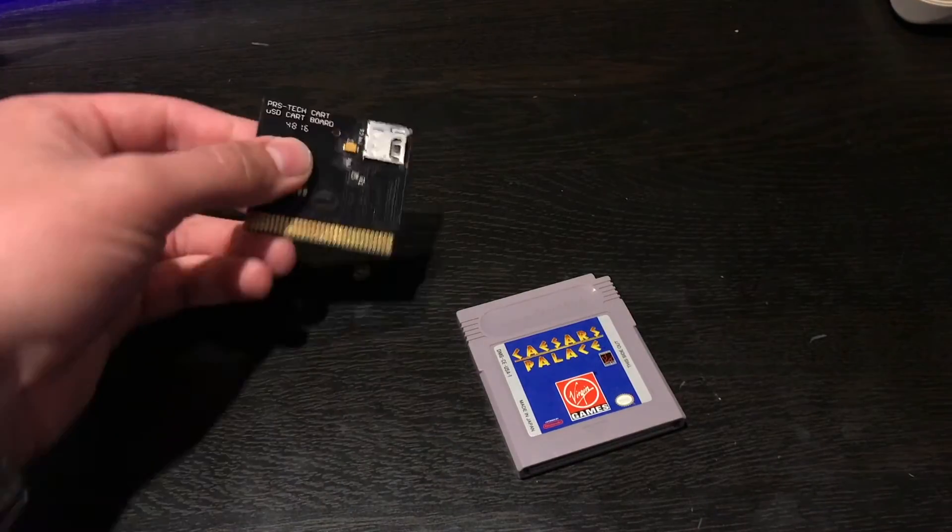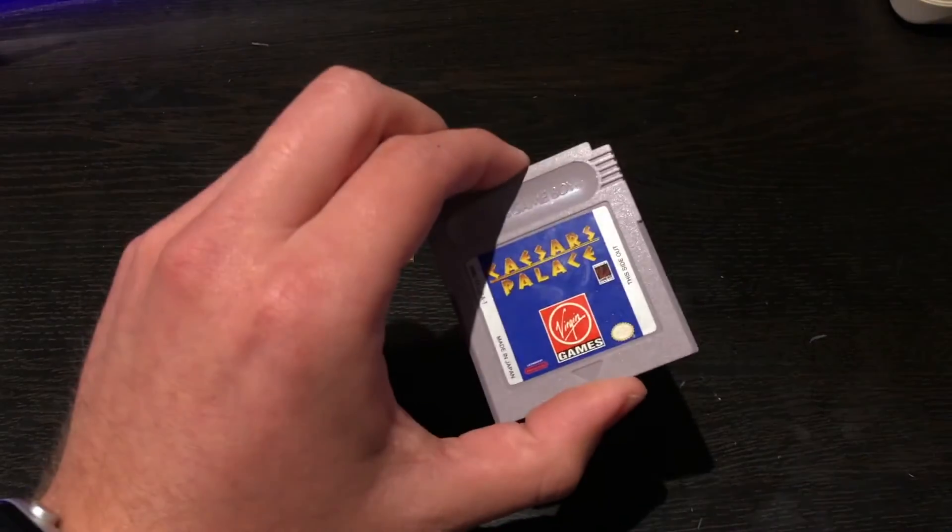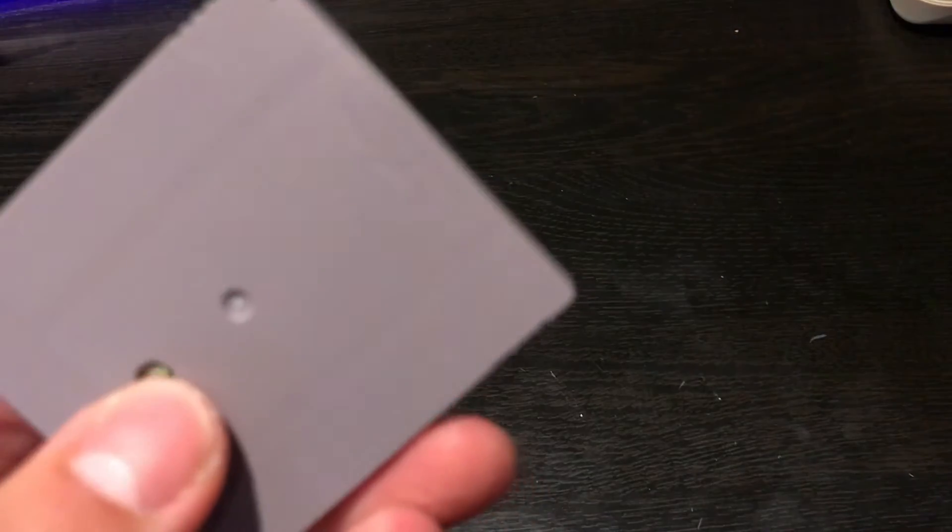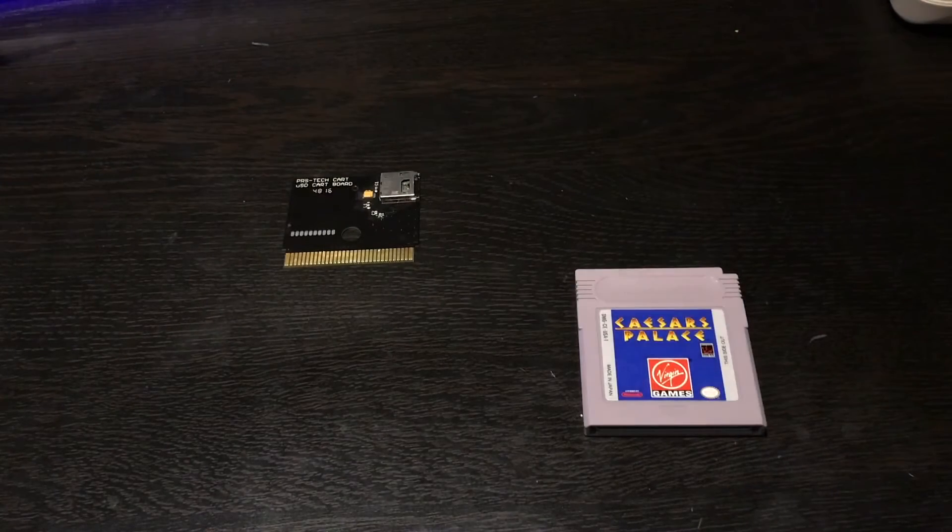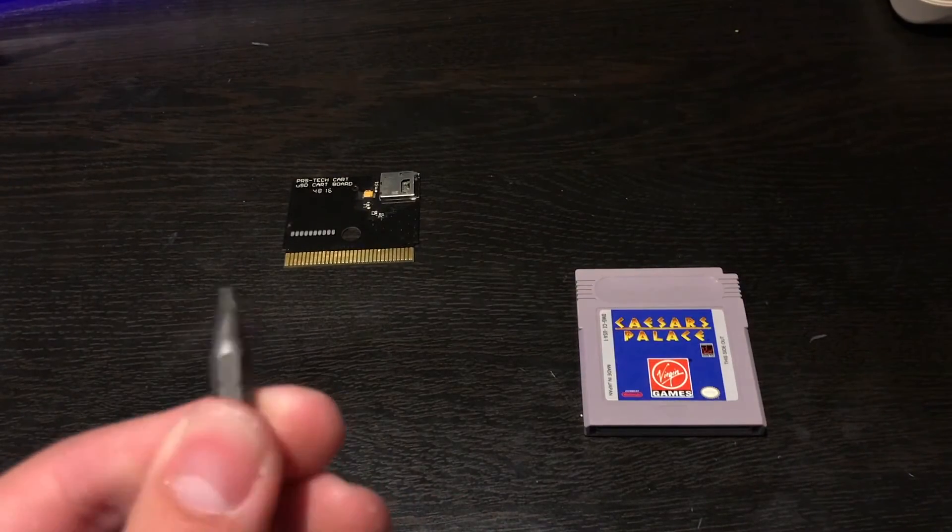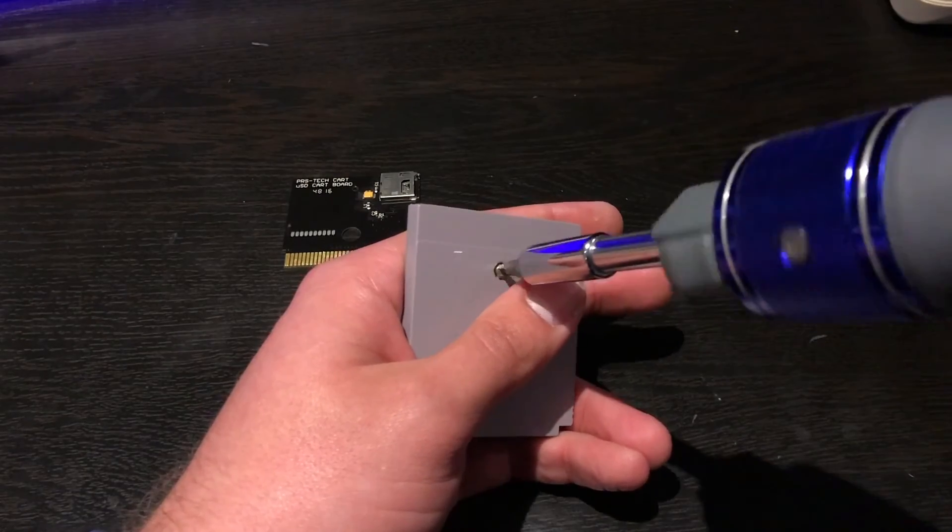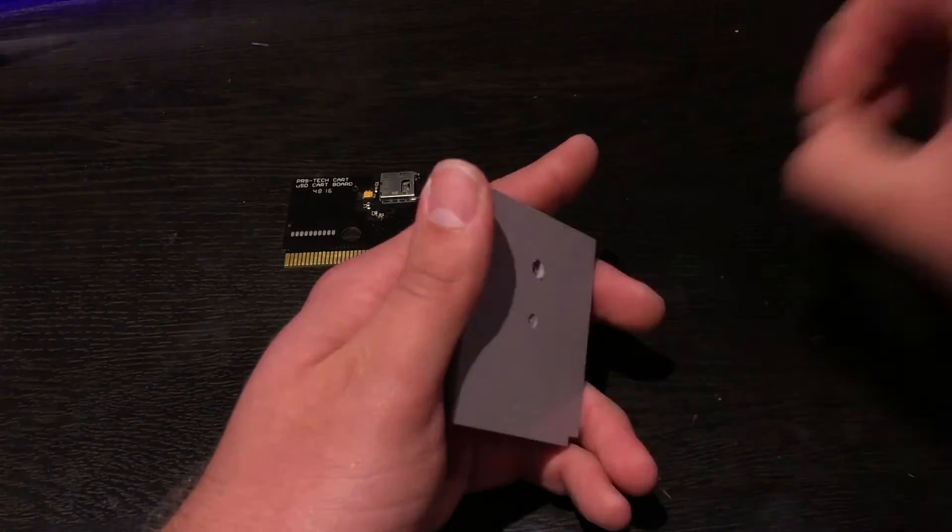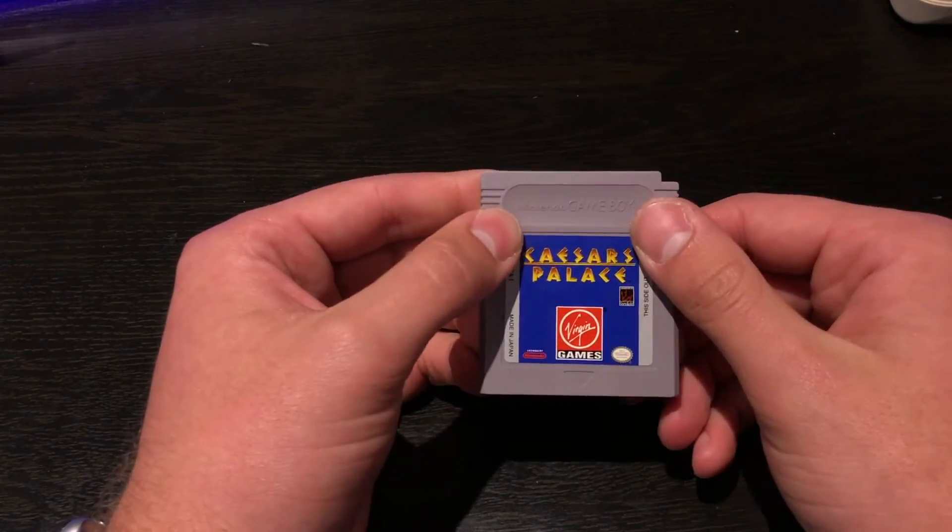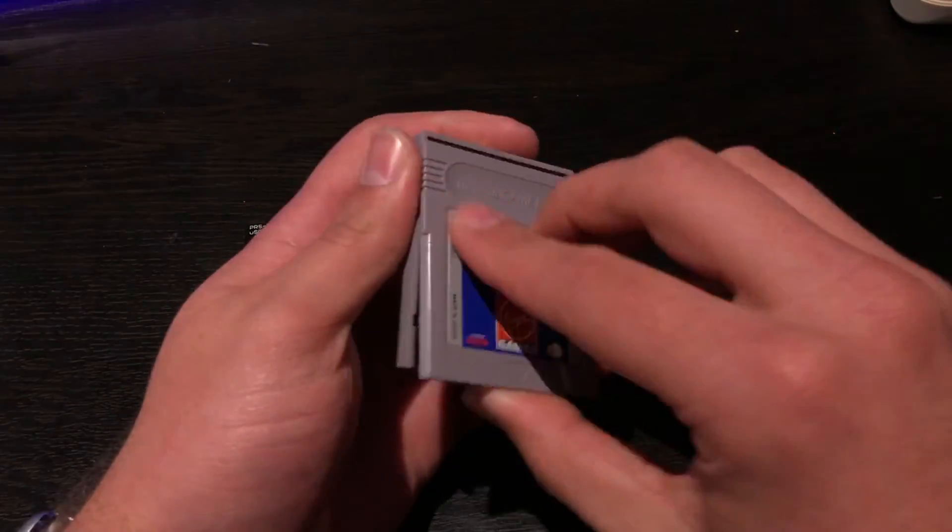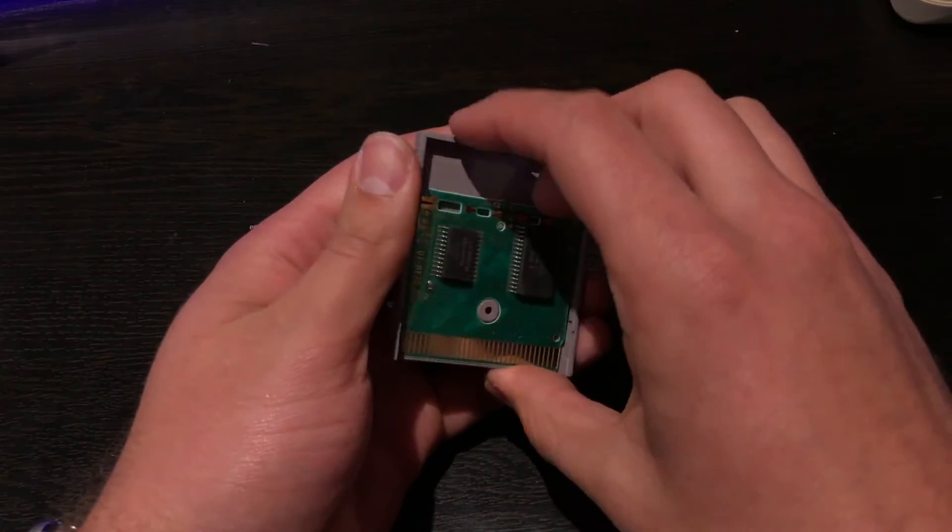Now moving on to installing the SD cartridge board into a cartridge. First thing you need to do is remove this security screw in the back here. Now to do that, I use a bit that looks like this. I actually got it from Harbor Freight. Once you have the screw out of the back, you just need to flip it over, push this faceplate down, and then lift it up and take it off. And there's the game. We can take it off and set that to the side.